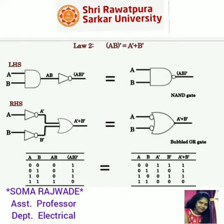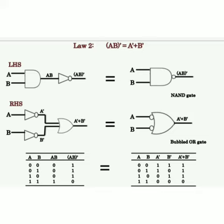Here is the second law. In the second law we are using AND gate, NOT gate, and OR gate. The left hand side says that if both inputs are high then we get the output and invert it. For the right hand side we are taking an OR gate, and for the bar condition we first take NOT gates and then an OR gate. Here we get left hand side equals right hand side.